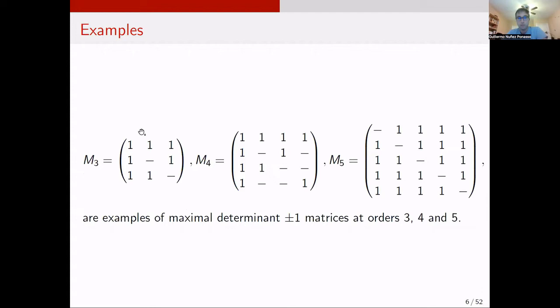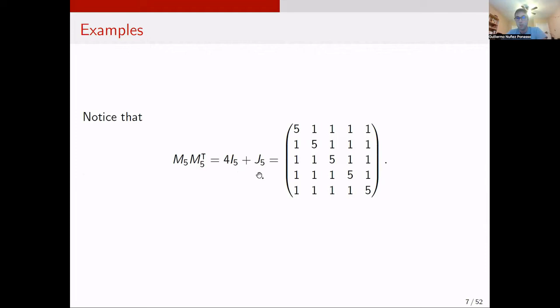Some examples of maximal determinant matrices at orders 3, 4, and 5. Notice that the 5×5 example satisfies a matrix equation where the pairwise inner product of rows is 1 if they're different, or 5 if they're the same. This is a nice characterization of maximal determinant matrices at orders that are not multiples of 4. They satisfy a refined upper bound called the Barba bound, which we will mostly focus on.